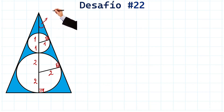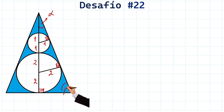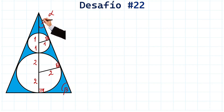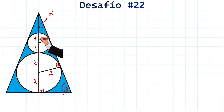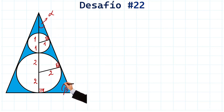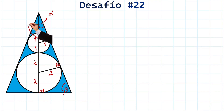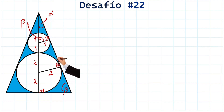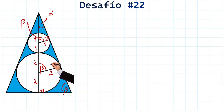We will call this angle here alpha and this angle over there beta. So if we have 90 degrees and alpha in the small triangle, the missing angle to reach 180 degrees must be beta. In the larger triangle, 90, alpha, and beta add up to 180 degrees — the sum of angles in a triangle. The same logic applies to this triangle: if we have 90 here and alpha here, then this angle must be beta.